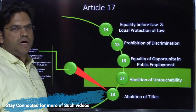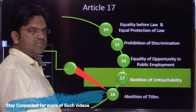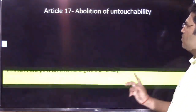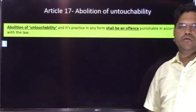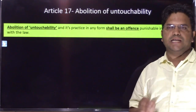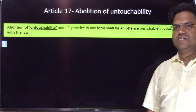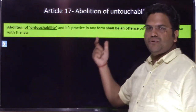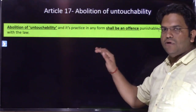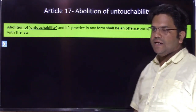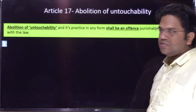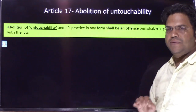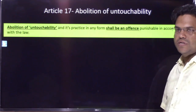Article 17 deals mainly with abolition of untouchability. The article reads: 'Abolition of untouchability and its practice in any form shall be an offense and should be punishable in accordance with the law.' We can divide it into two parts: first, it abolishes untouchability; and second, its practice in any form shall be an offense punishable in accordance with law.